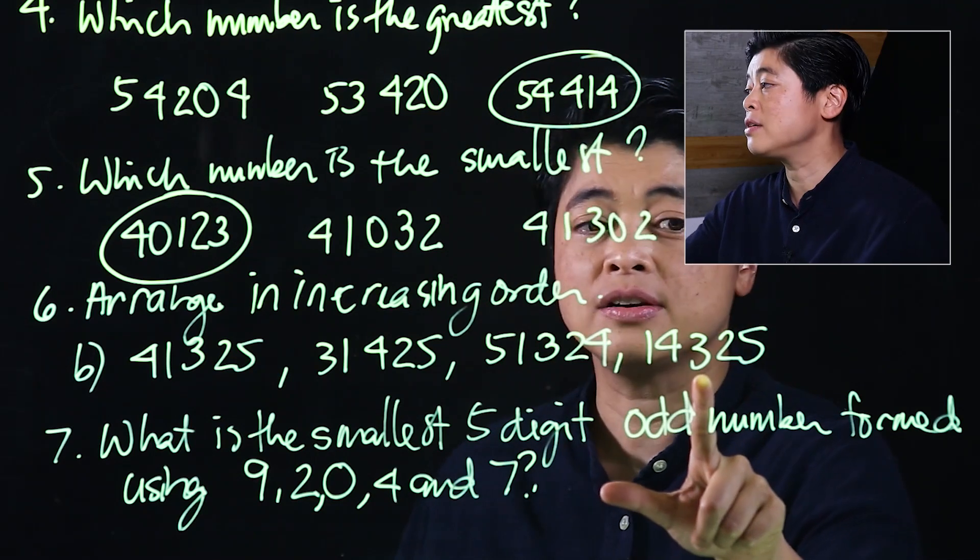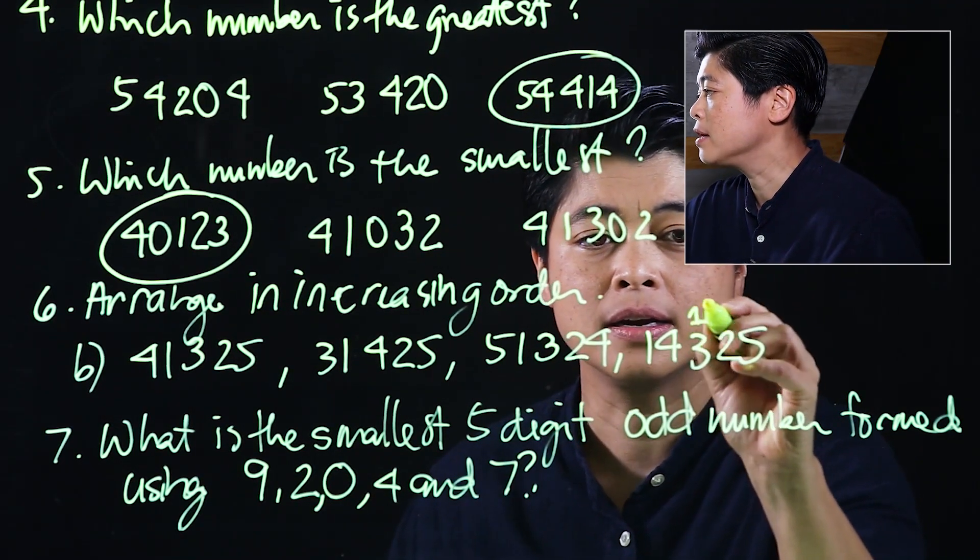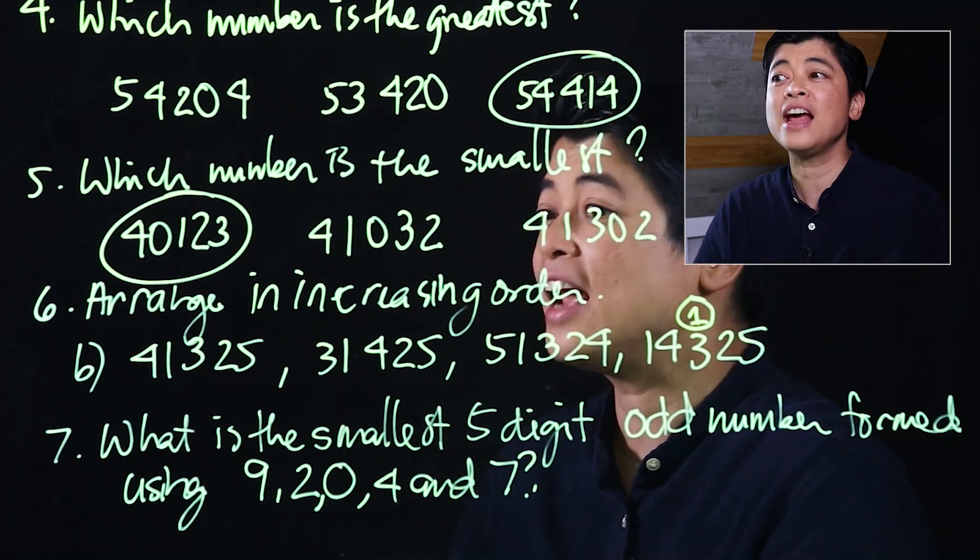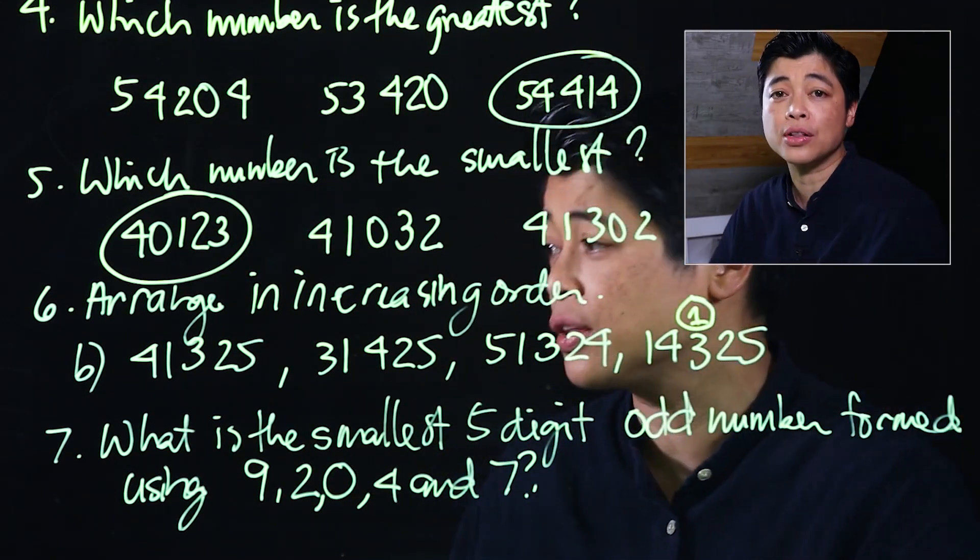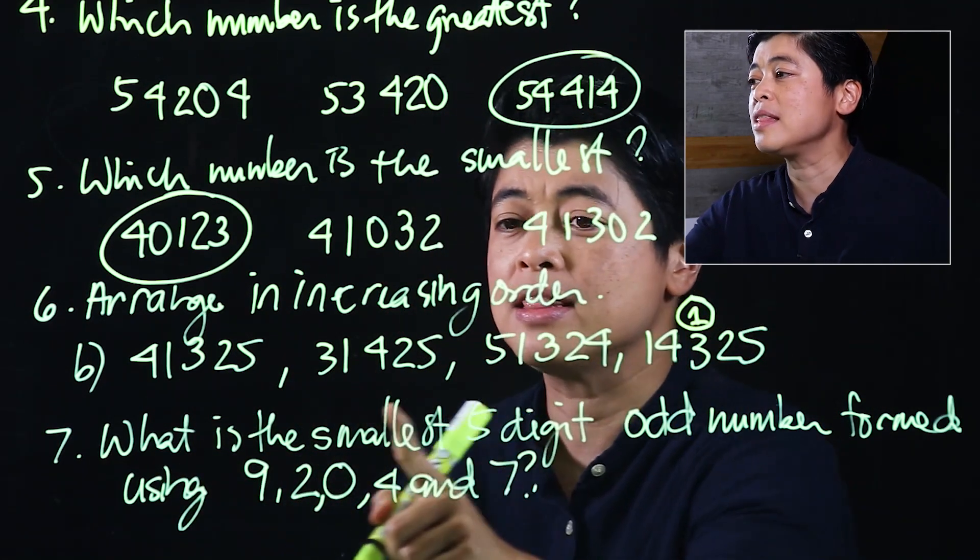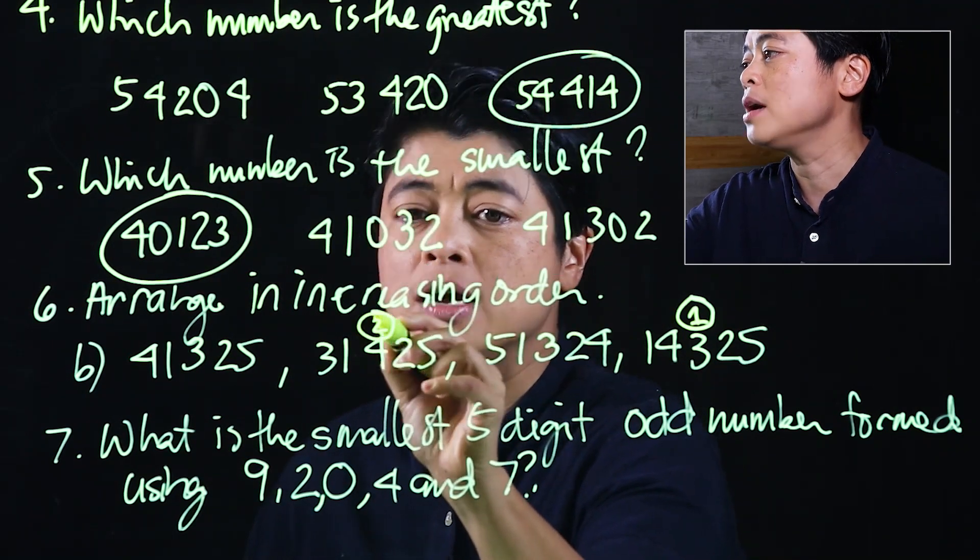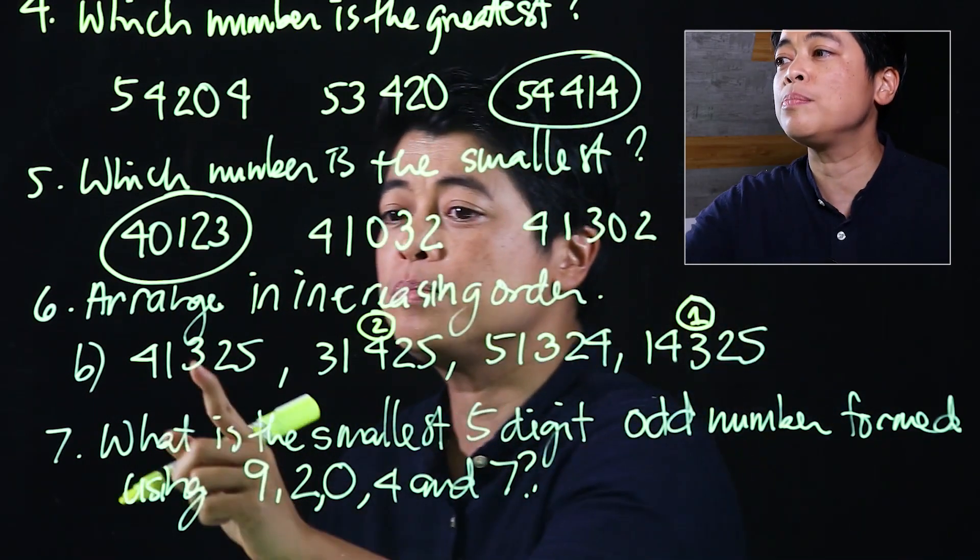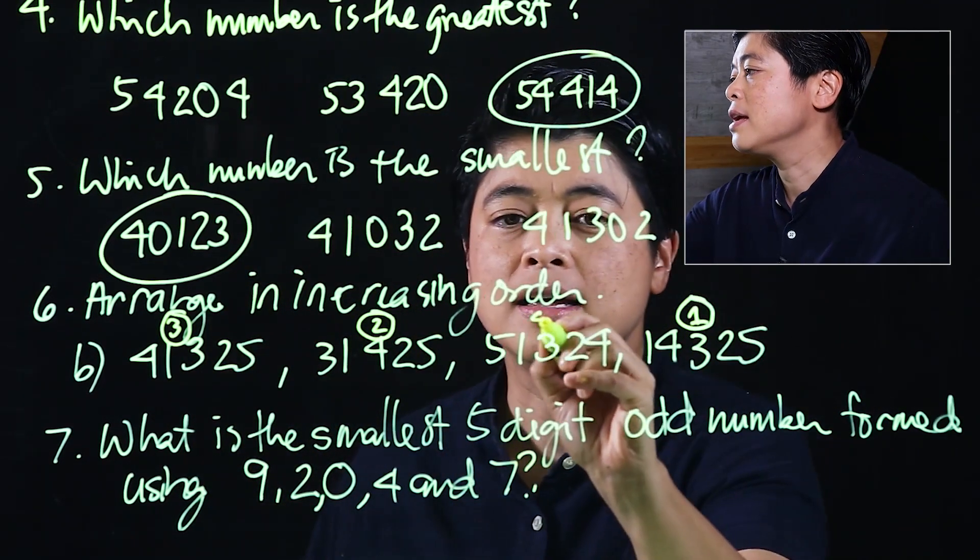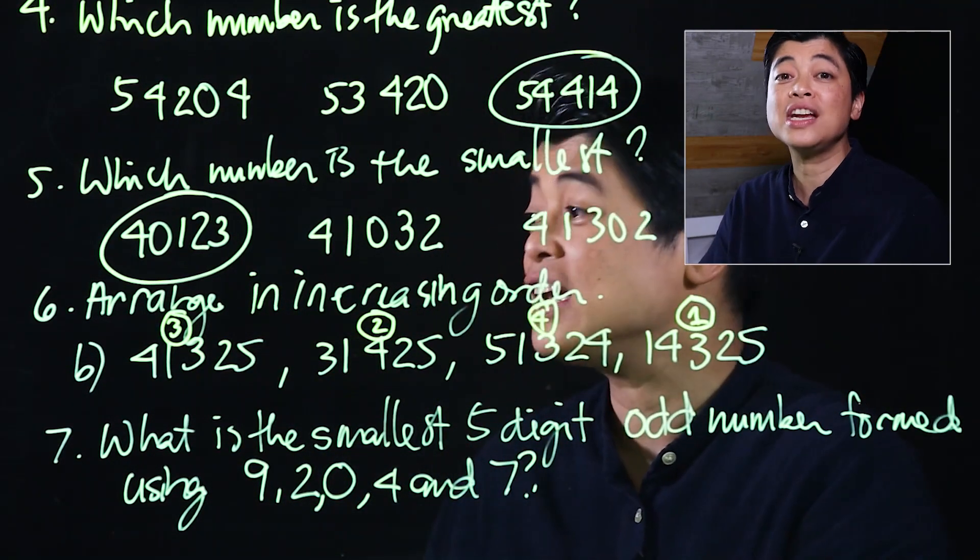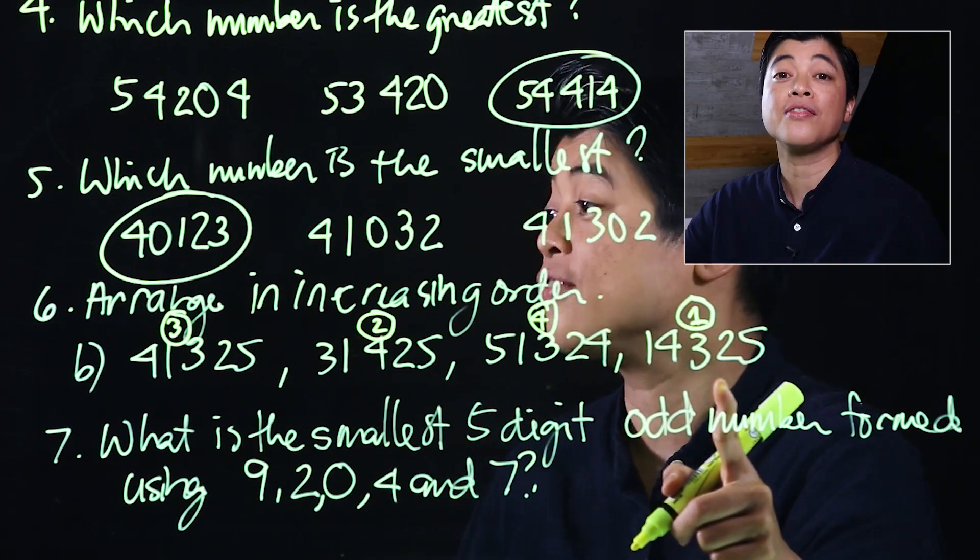I'm going to put a number 1 here. Then I look for the next smallest because we want increasing order, so the next one will be the 3—that's my number 2—and then followed by the 4, which is my number 3, and number 4. If they want to arrange in increasing order, you write 14,325 first, then followed by 31,425, followed by 41,325, and lastly 51,324.